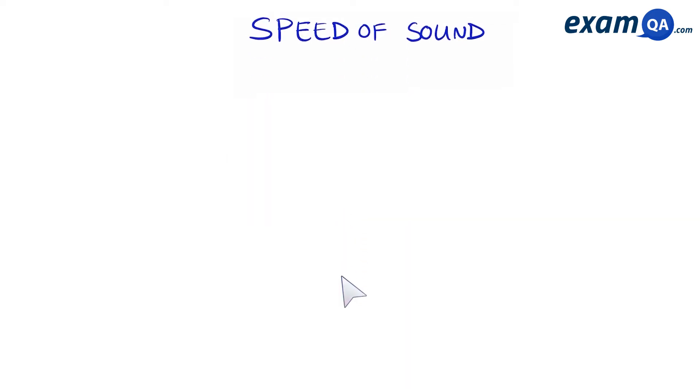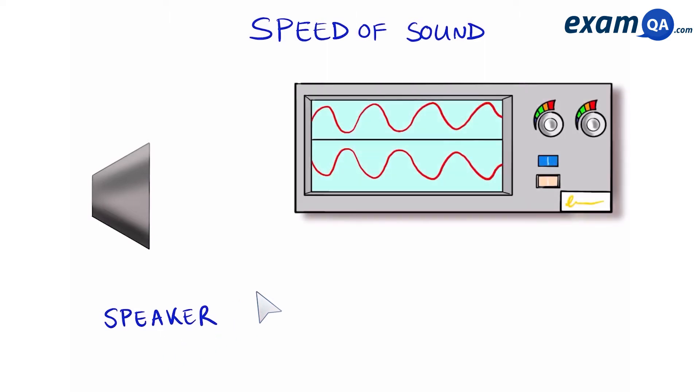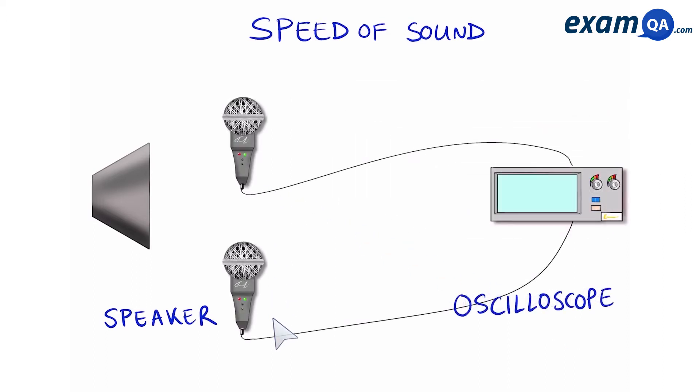So first of all what we need is a speaker or any device that you can control the frequency of sound being released from it, an oscilloscope which is a machine that will help to show us the frequency of sound, and finally we're going to need a pair of microphones. These will help to detect the sound waves.